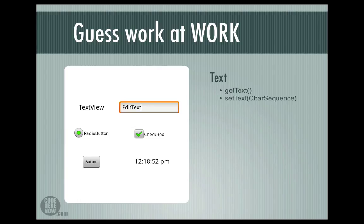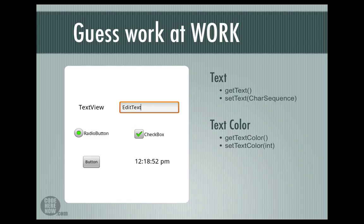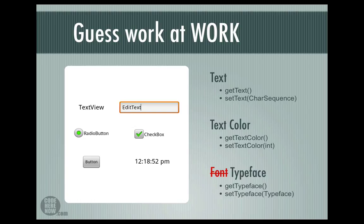Here I have six different views: the text view, the edit text, the radio button, the checkbox, a button, and a digital clock. We are going to find out some of the properties of these views. Among the given views, what properties do you think are the most common? If you say text, then you guessed it right. So there should be a method called getText and another method called setText. When you look at CharSequence in the brackets, don't be alarmed — it is just a string. So whenever you see a CharSequence, think of a string. The next prominent property is text color, so there should be getTextColor and setTextColor. In Android a color is represented as an integer. For font — the problem with guesswork is you can't be right all the time — there is no property called font; instead we have the typeface property, so there is getTypeface and setTypeface.